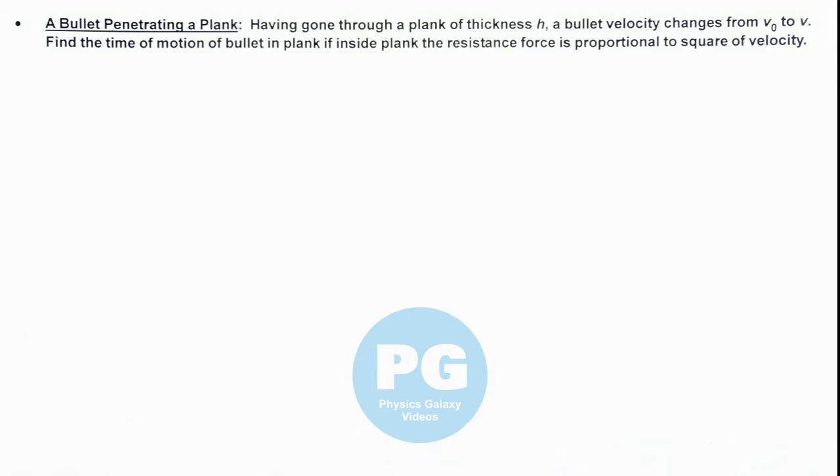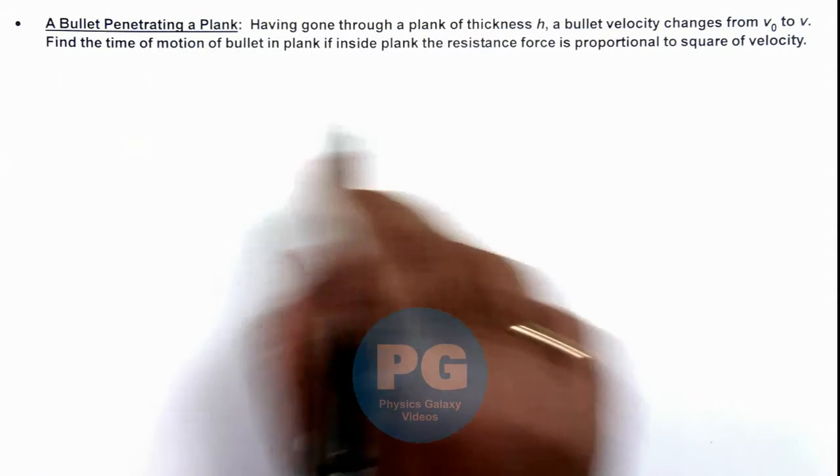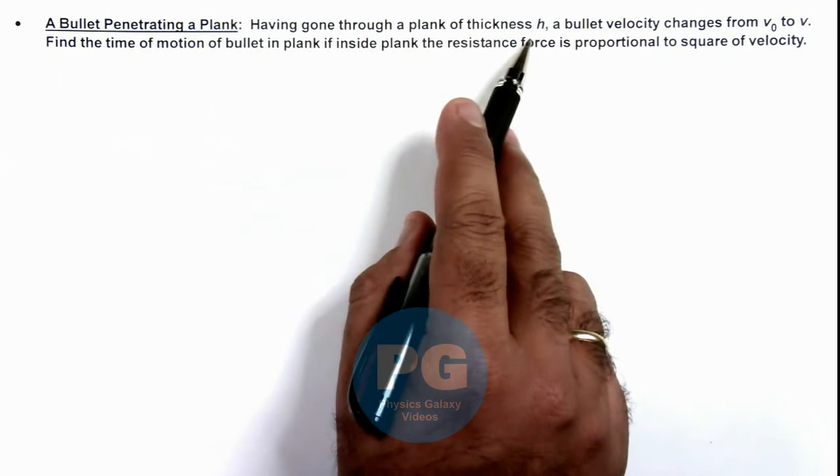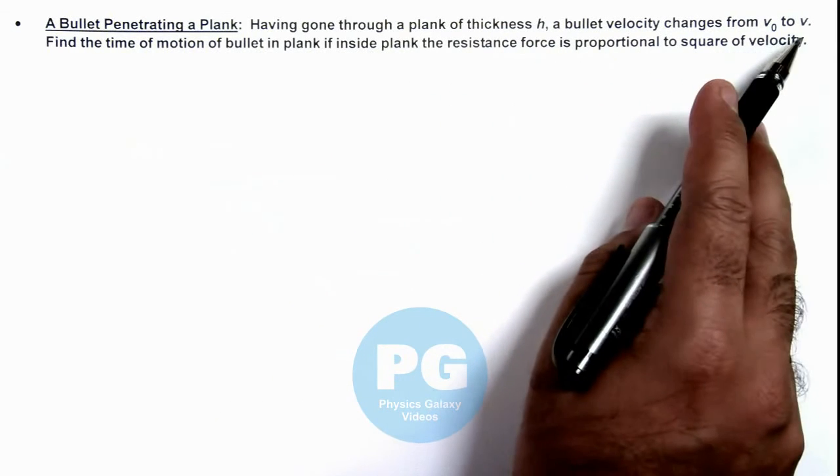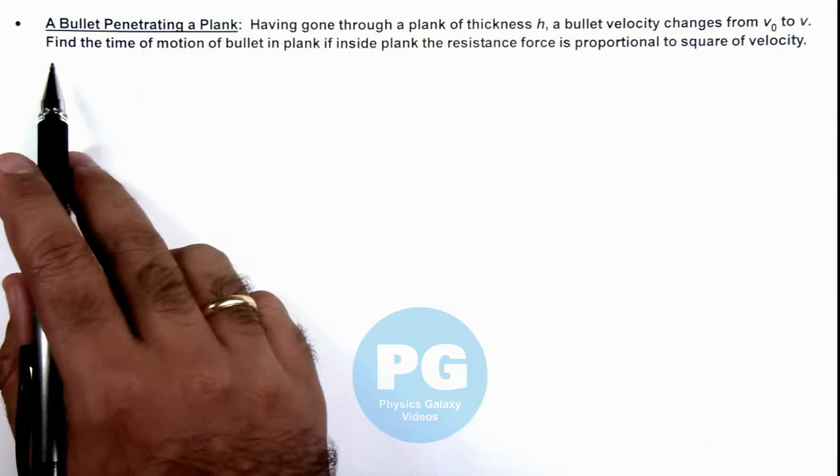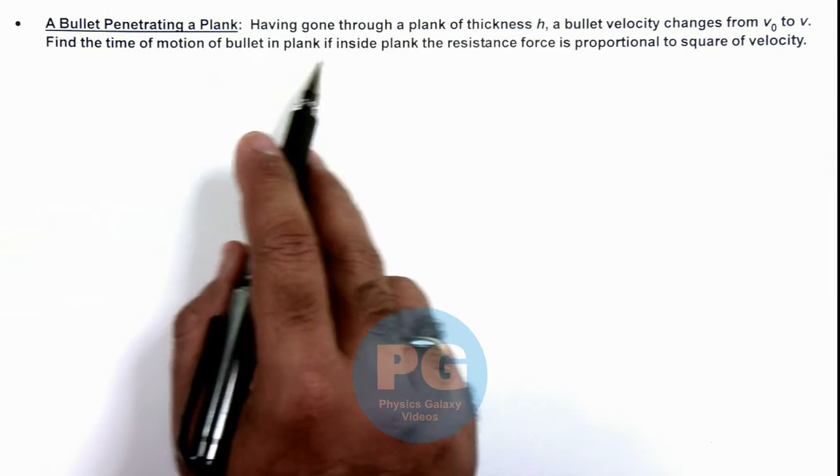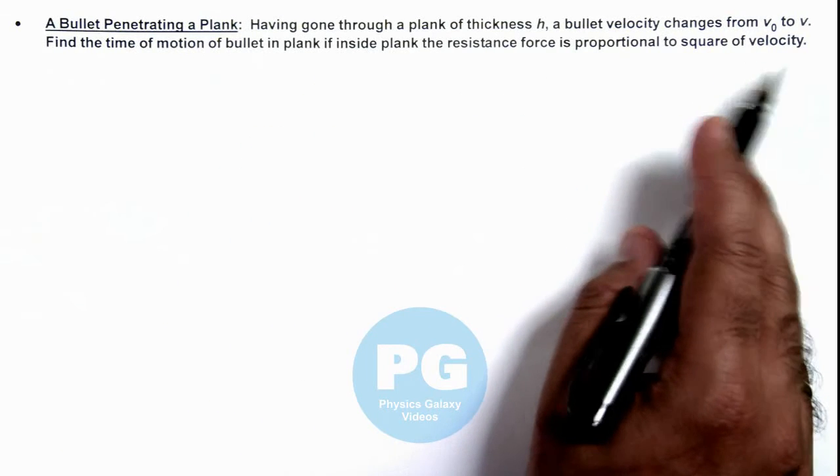In this illustration we'll discuss a bullet penetrating a plank. The situation is stated as: having gone through a plank of thickness h, a bullet velocity changes from v₀ to v. We are required to find the time of motion of bullet in plank if inside plank the resistance force is proportional to square of velocity.